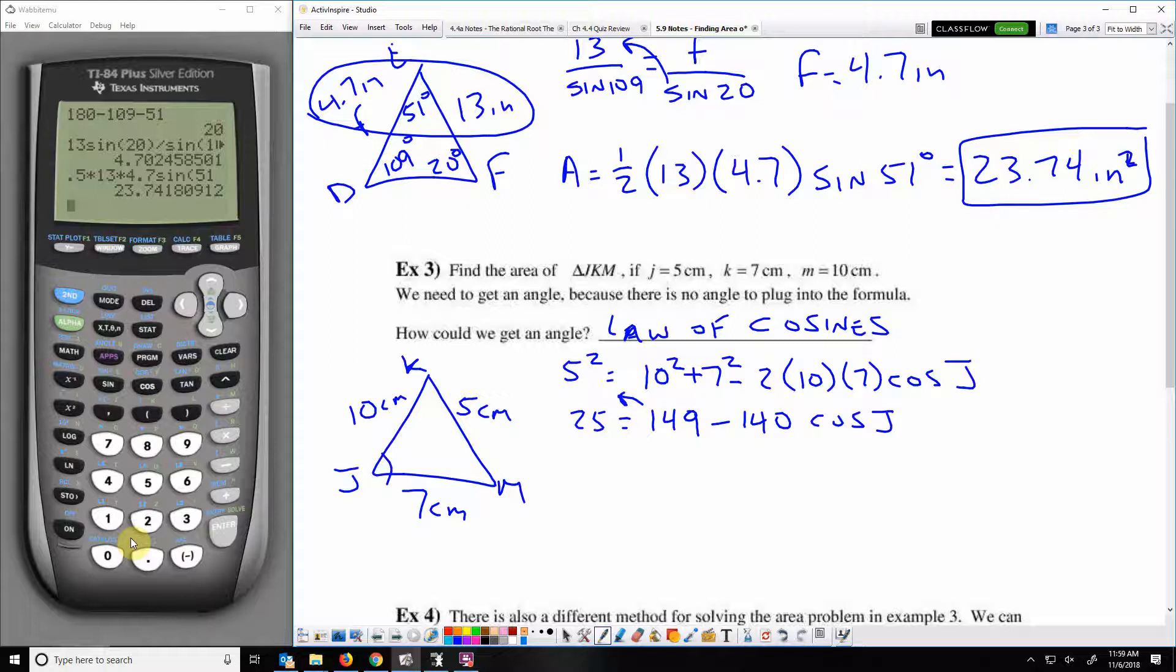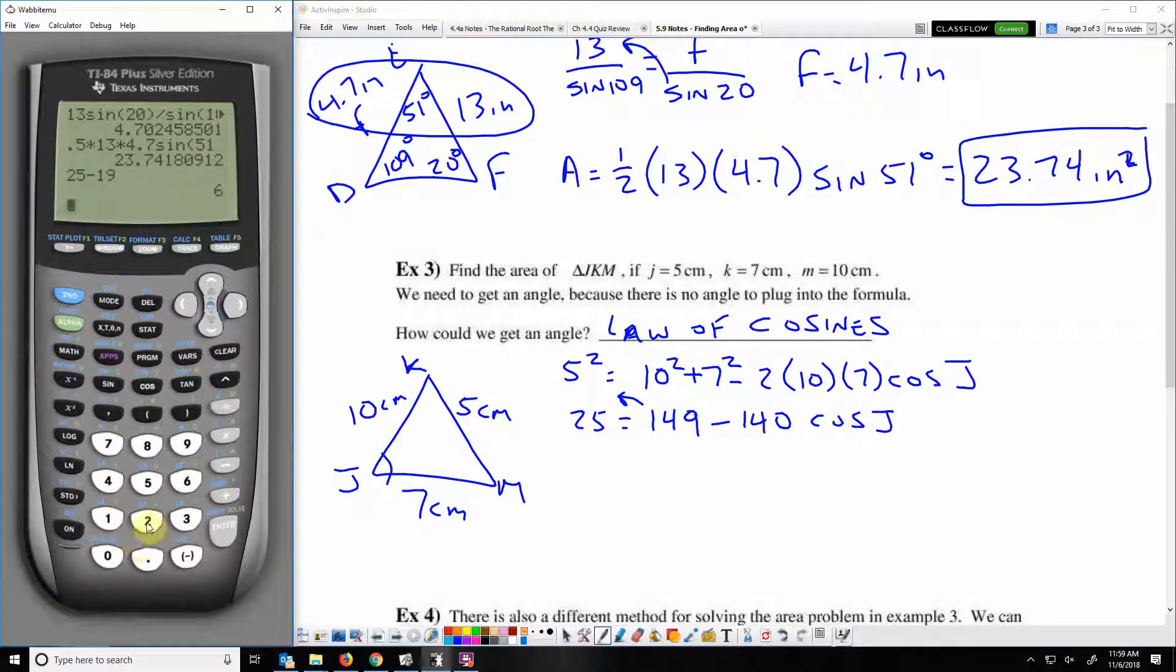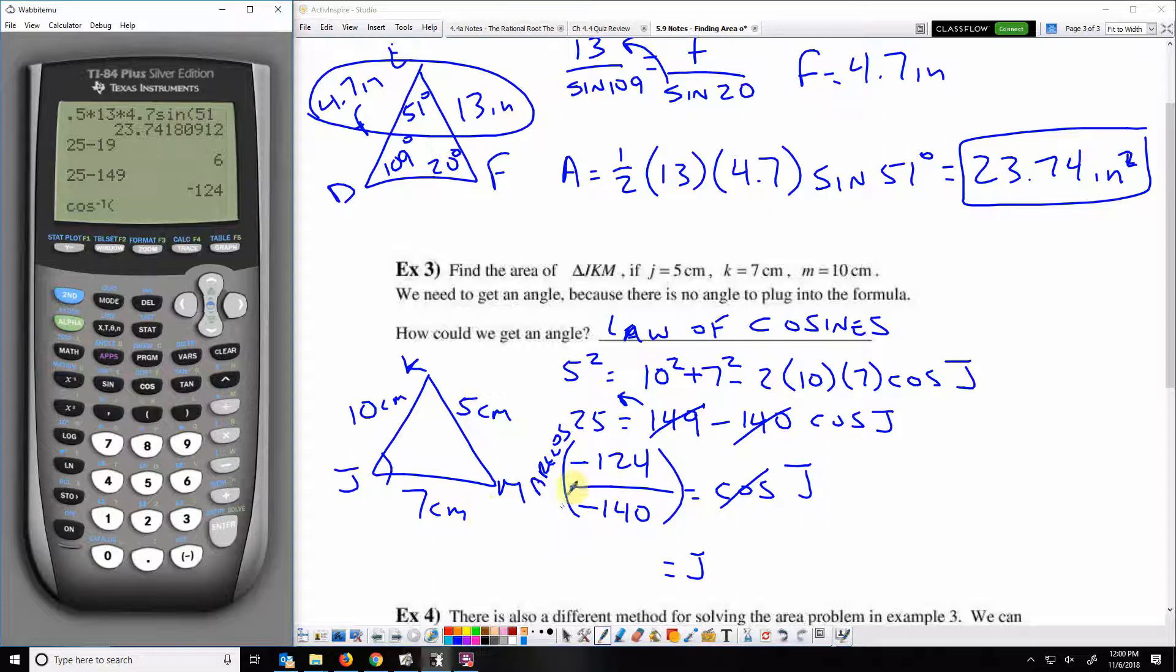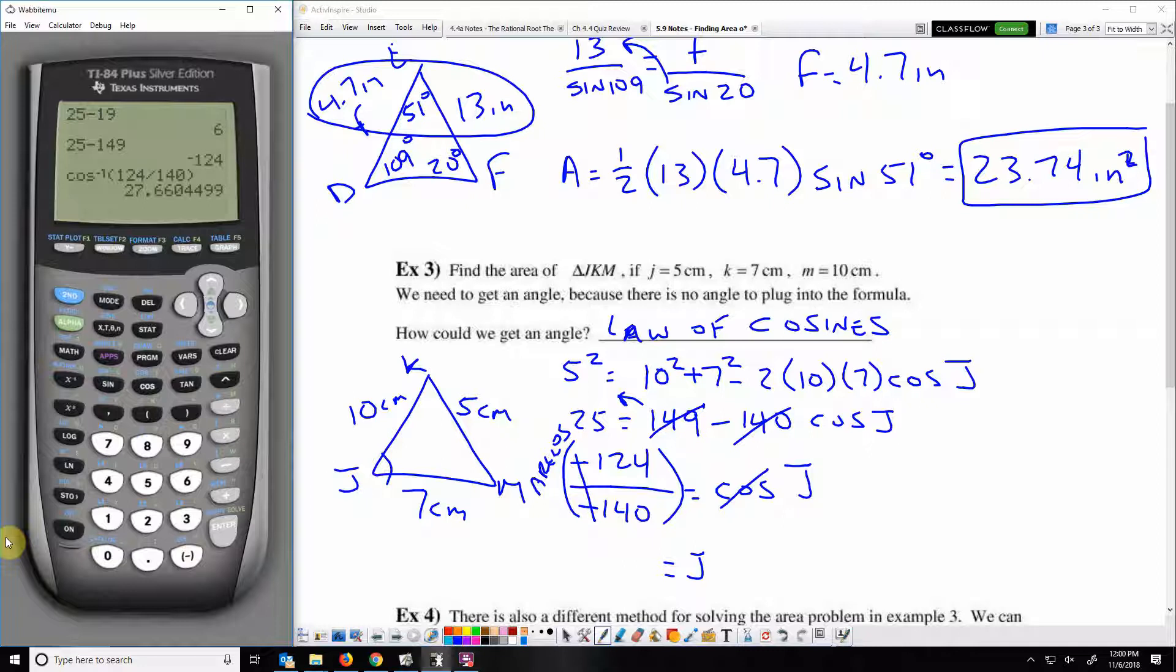I'm going to subtract that 149. I get negative 124. I'm also going to divide by that negative 140. Then to get rid of cosines, I'm going to do arc cosines. Now I've got J all by itself. I can put in the negatives or just recognize that those cancel and just do 124 over 40.